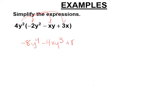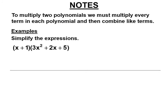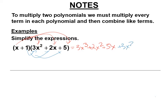4y squared times 3x is 12xy squared. Now, this is what I showed you in the example. You have to do everything by x: x times 3x squared is 3x cubed, x times 2x is 2x squared, x times 5 is 5x. And we're going to multiply everything times this 1 — 1 times 3x squared, 1 times 2x, 1 times 5. Then we look for like terms: no other x cubed terms, but 2x squared plus 3x squared is 5x squared, 5x plus 2x is 7x, and plus 5.